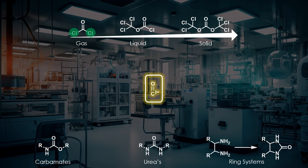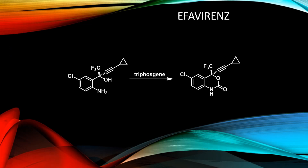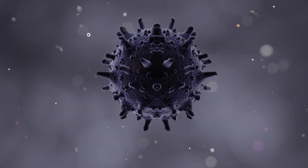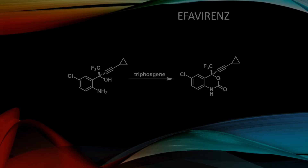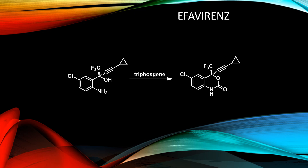Triphosgene can also be used in cyclisation reactions to form ring systems, as demonstrated in the synthesis of FFRNs, a non-nucleoside reverse transcriptase inhibitor used to prevent and treat HIV. In this case, triphosgene is used to insert a carbonyl group between the alcohol and the aniline group, creating a six-membered cyclic carbamate.